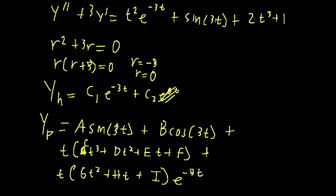In this example, we've talked about particular solutions for polynomials, sinusoids, exponentials, combinations of the two, and modification because they overlap with the homogeneous solution. So hopefully that all made sense.